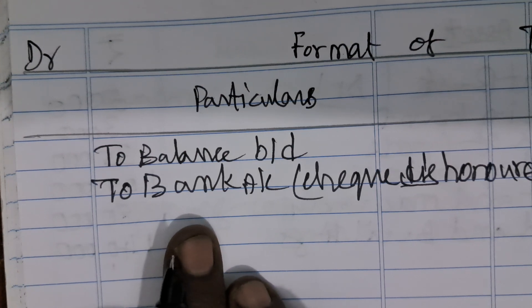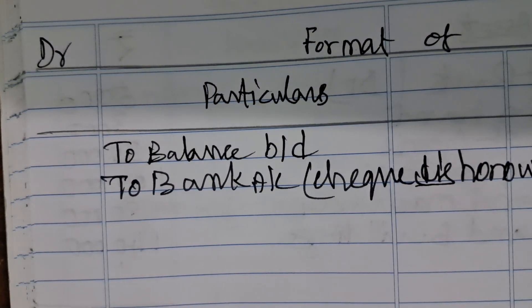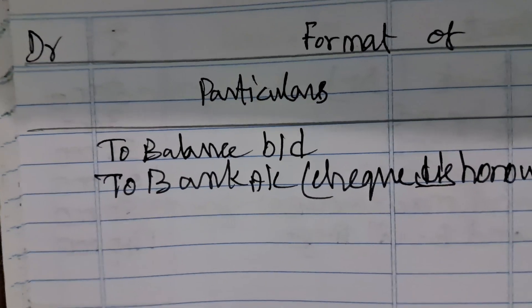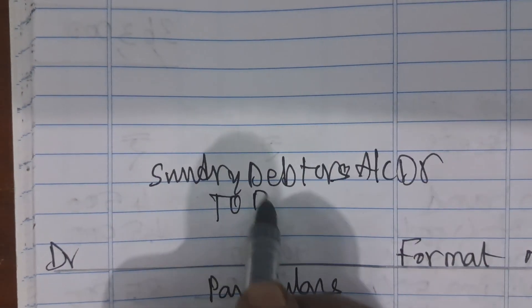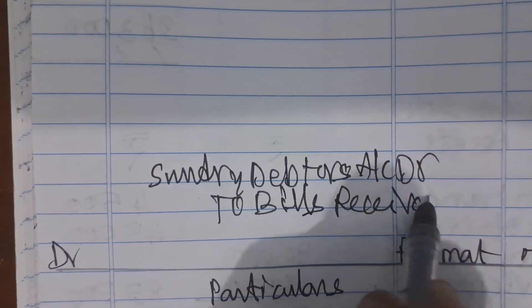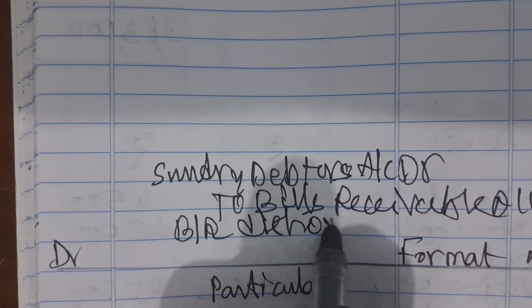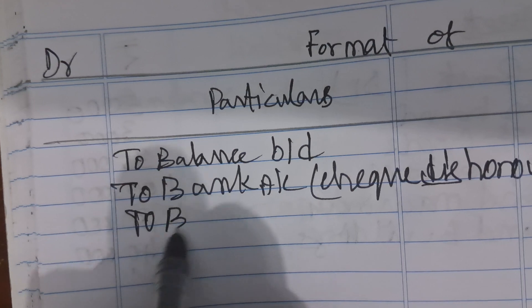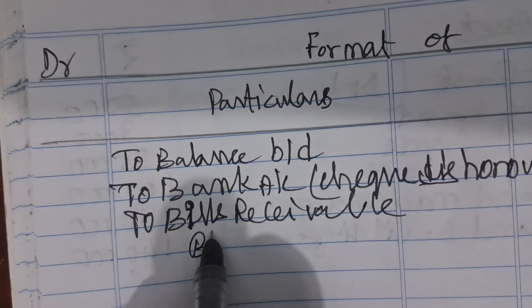If the bills receivable is dishonoured, the entry is: Sundry Debtors Account debit to Bills Receivable Account. This reversal entry — sundry debtors account debited, bills receivable credited — is posted on the debit side of the Total Debtors Account as 'To Bills Receivable — dishonoured'.